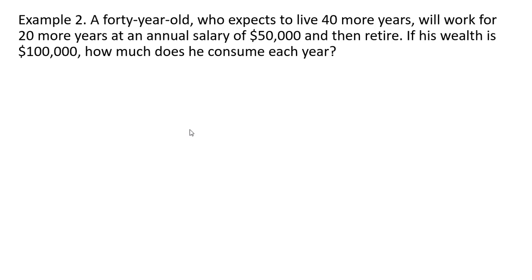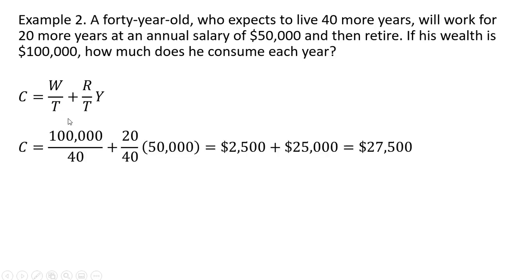Now let's assume a 40-year-old who expects to live 40 more years will work for 20 more years at an annual salary of $50,000 and then retire. If his wealth is $100,000, how much does he consume each year? Plugging in values for W and Y: 20 times $50,000 is lifetime earnings, spread over 40 years, and the $100,000 wealth is also spread over 40 years. So this person will be able to consume $27,500 each year for the next 40 years.